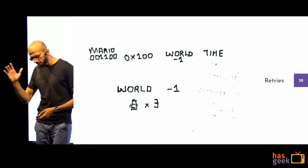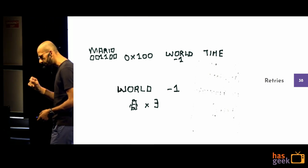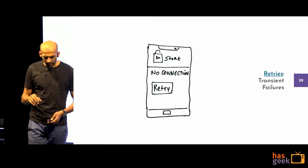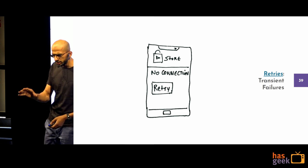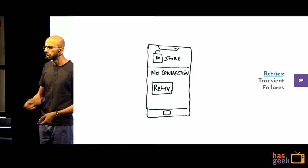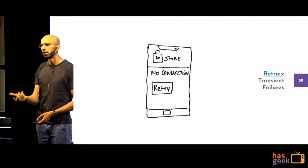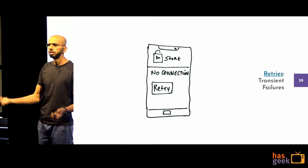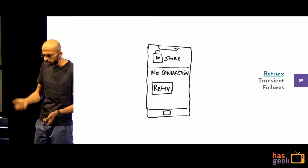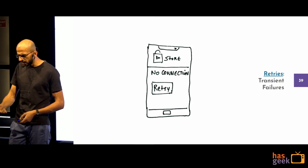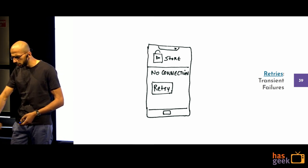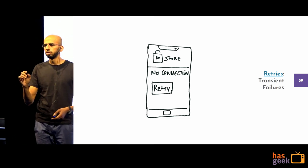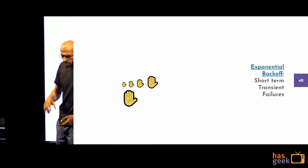This is where we introduce retries. A standard retry: a transient network blip caused failure, you retry once, twice, the third time it works. An immediate retry sequence — once, twice, thrice — can handle intermittent failures. But some failures won't resolve themselves in a few seconds.